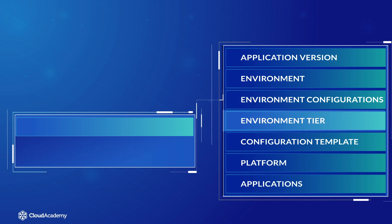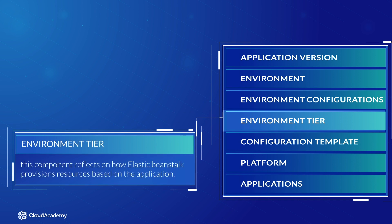The Environment Tier: this component reflects on how Elastic Beanstalk provisions resources based on what the application is designed to do. If the application manages and handles HTTP requests, then the app will be run in a web server environment. If the application does not process HTTP requests and instead perhaps pulls data from an SQS queue, then it would run in a worker environment. I shall cover more on the differences between the web server and the worker environments in the next lecture.